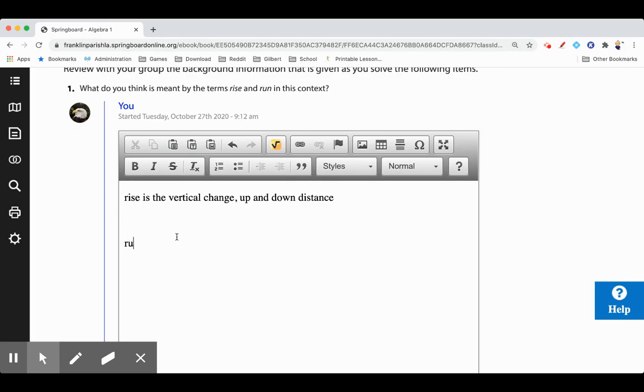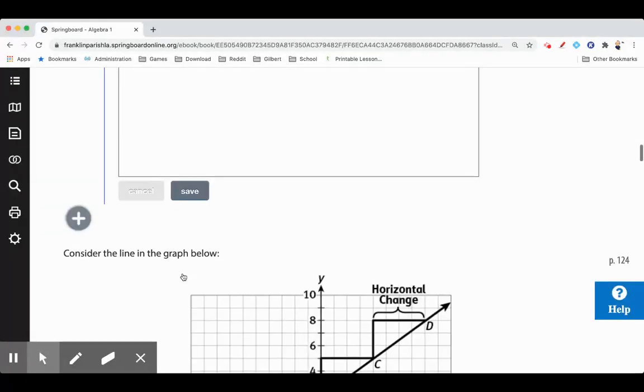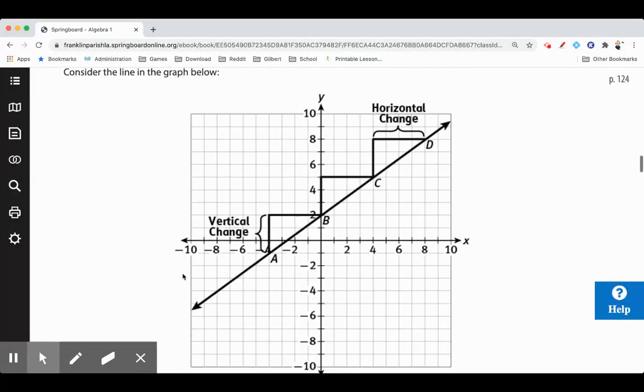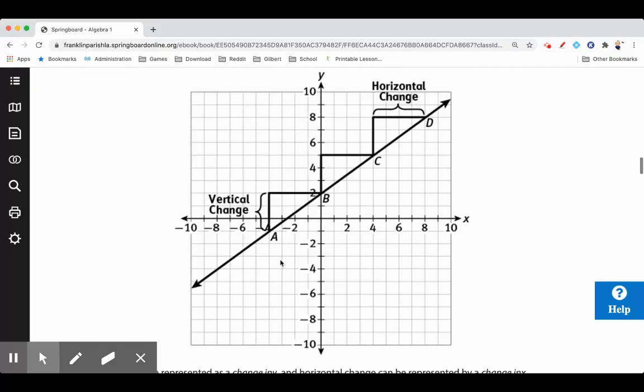The run is going to be the horizontal change which is left and right. Let's look at this line in the graph below. We can see the vertical change between two points is given by this and the horizontal change is given here. Vertical, horizontal, vertical, horizontal.